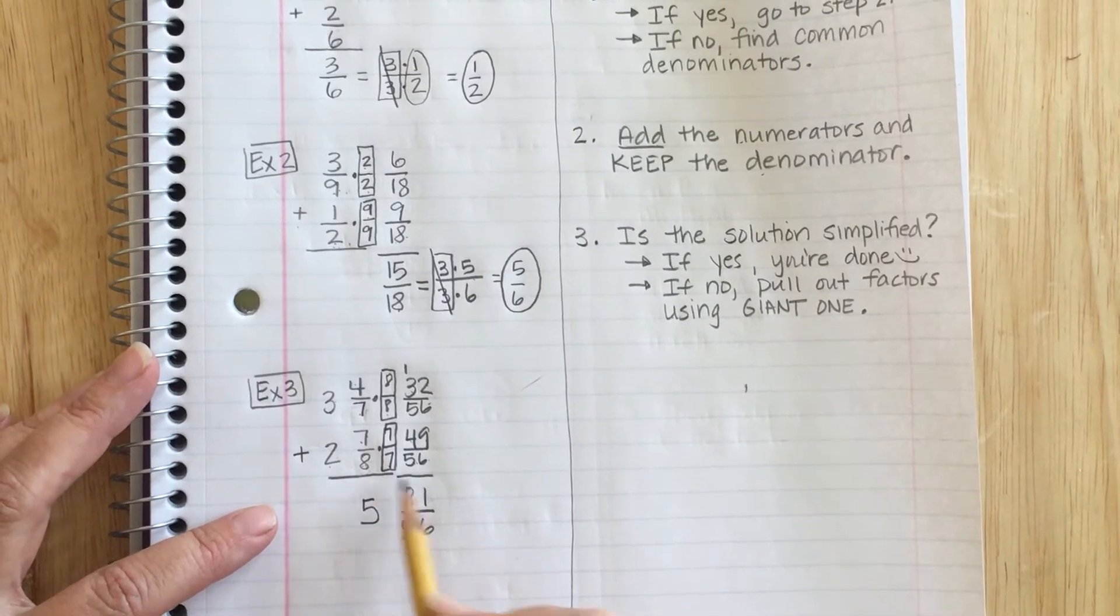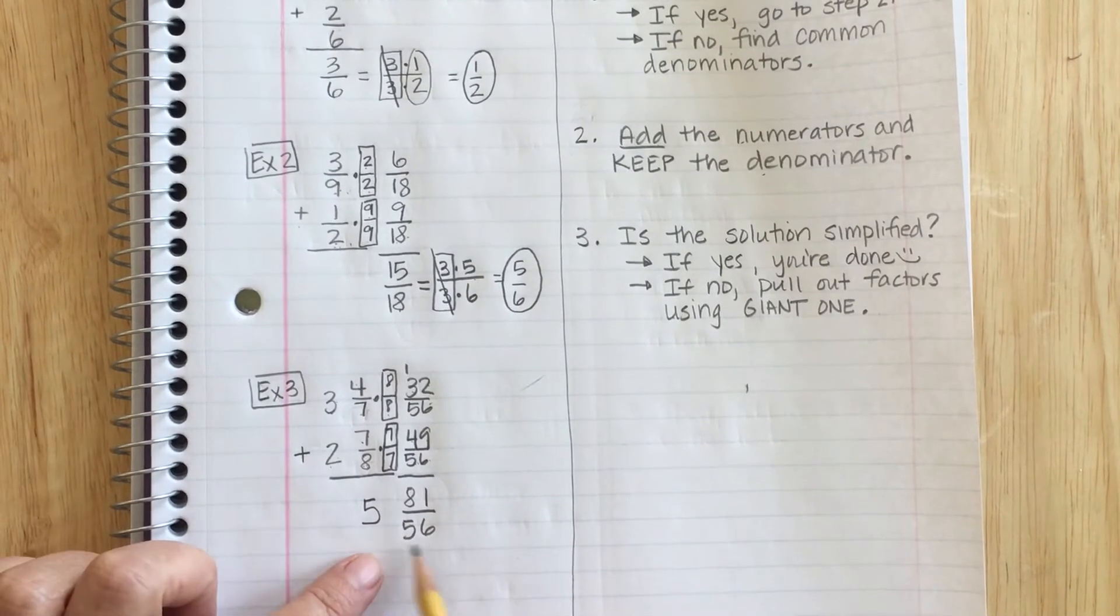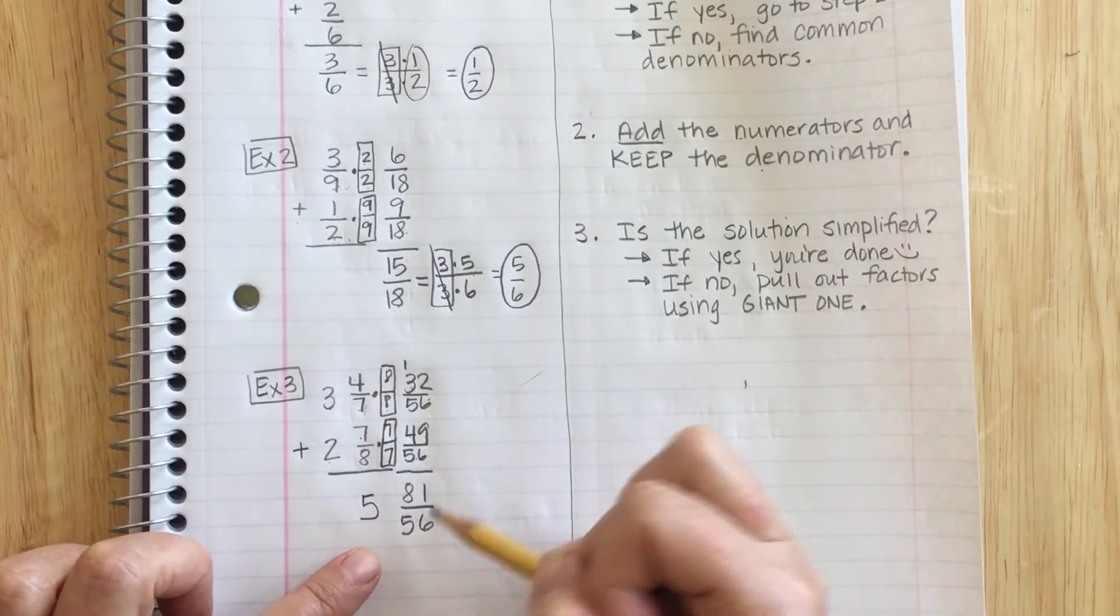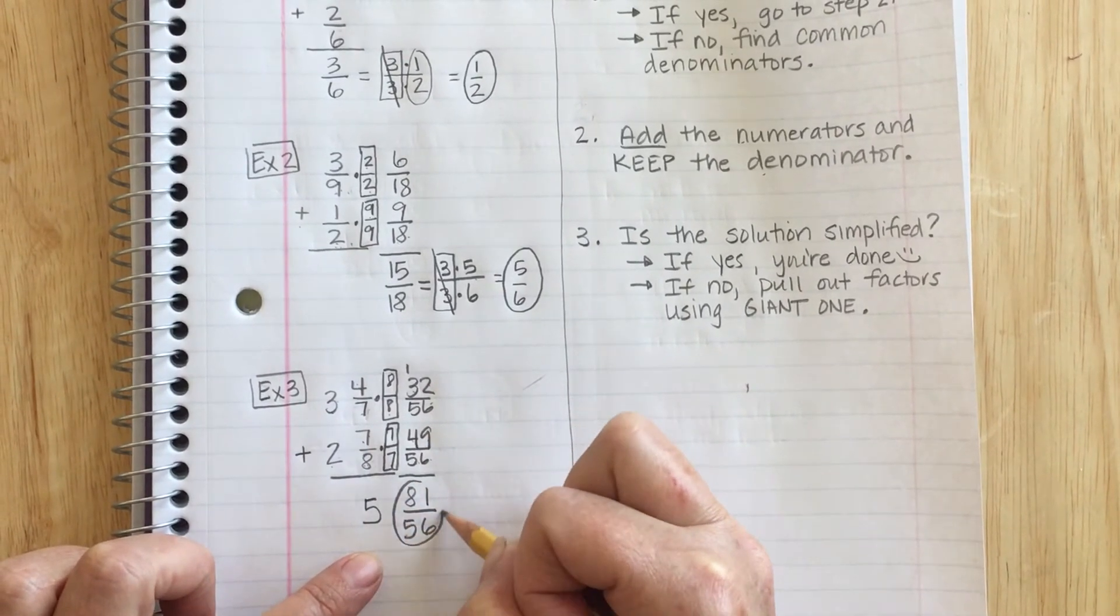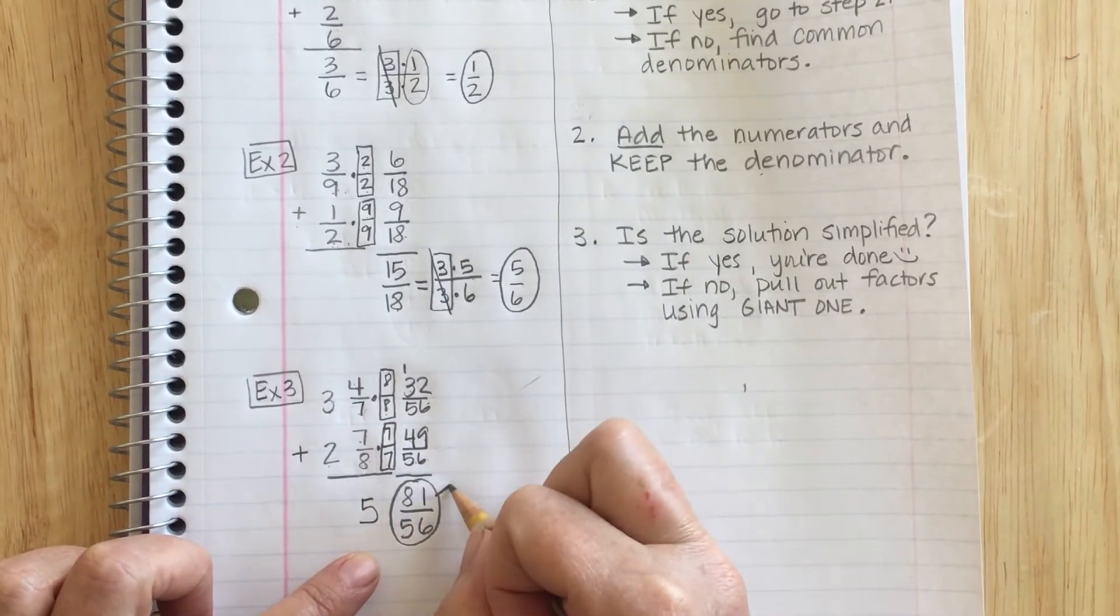Now I can't leave my fraction in this form. Notice I have a mixed number, but my fraction is improper. I have to turn this into another mixed number. So I'm going to do that.